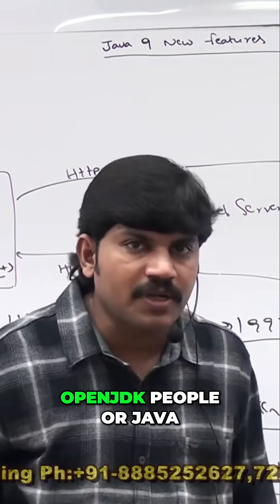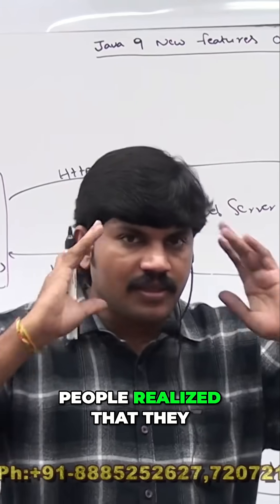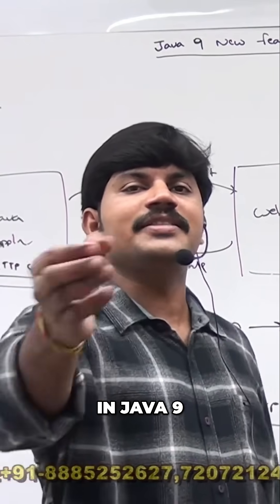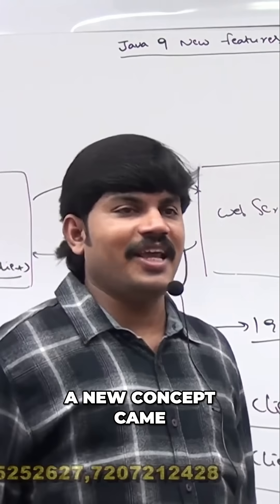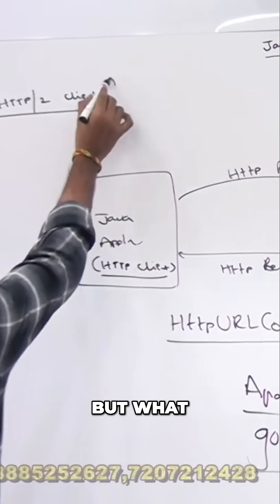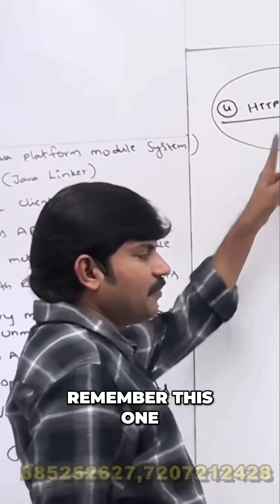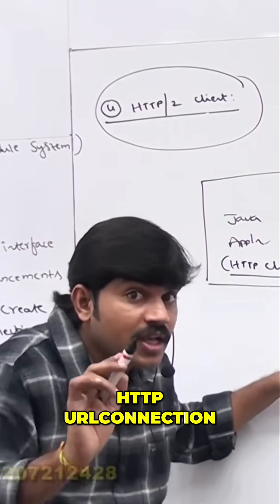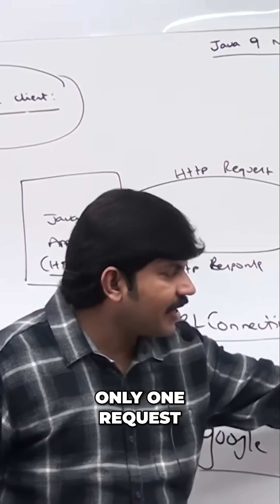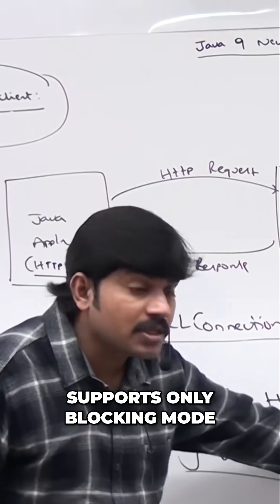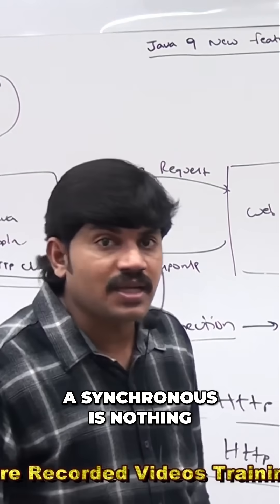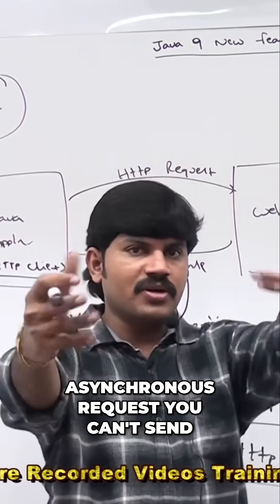OpenJDK and Java developers realized they needed a new concept, so in Java 9 a new concept came to send HTTP requests very easily — that concept is the HTTP/2 Client. Earlier, we used HttpURLConnection, which was difficult to use: it only supported one request at a time, was text-based only, and supported only blocking/synchronous mode — you could not send asynchronous requests.